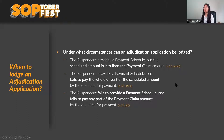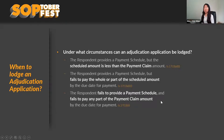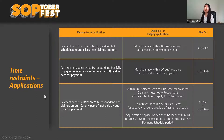The second scenario is where a payment schedule has been provided but the respondent has failed to pay the whole or part of the scheduled amount. For example, if the claim was $100 and they've only paid $50, you can still adjudicate because it's not fully paid. The last instance is where they've failed to provide a payment schedule and failed to pay any part of the payment claim amount.